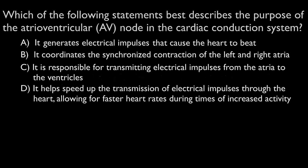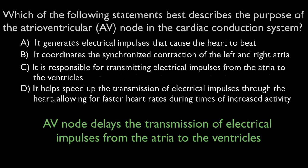The main function of the AV node is to delay the transmission of electrical impulses from the atria to the ventricles in order to allow for the atria to fully contract and empty their blood into the ventricles before the ventricles are stimulated to contract.